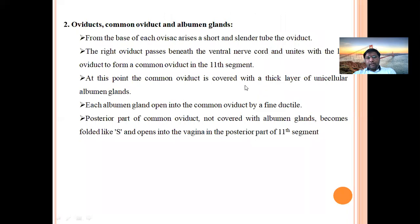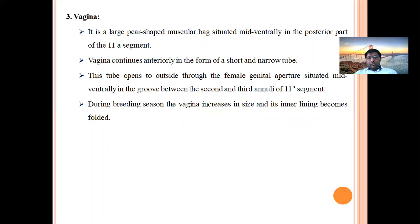At this point, the common oviduct is covered with a thick layer of unicellular albumin glands. Each albumin gland opens into the common oviduct by a fine ductule. The posterior part of the common oviduct, not covered with albumin glands, becomes folded and opens into the vagina in the posterior part of the eleventh segment.